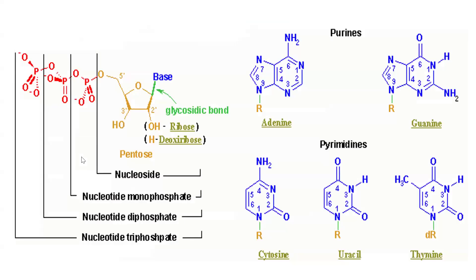For purines we have adenine and guanine; for pyrimidines we have cytosine, uracil, and thymine. When you add one phosphate to a nucleoside you get a nucleotide monophosphate, two phosphates gives a nucleotide diphosphate, and three phosphates gives a nucleotide triphosphate.